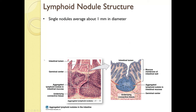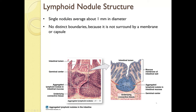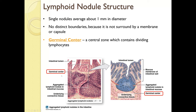Each lymphoid nodule averages only about one millimeter in diameter. They have no distinct boundaries because they are not surrounded by a membrane or capsule, so they can be very irregular in appearance. They do have a germinal center — a central zone that contains dividing lymphocytes. The aggregated lymphoid nodules in the intestine shown here are also called Peyer's patches.